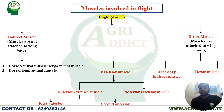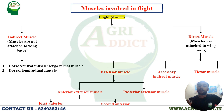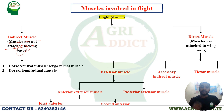Now, the flight muscles. There are two types: direct muscles and indirect muscles. Direct muscles are directly attached to the wing base. Indirect muscles are not attached to the wing base directly. Think of it this way: a direct friend is someone you contact directly; an indirect friend is a friend of a friend.